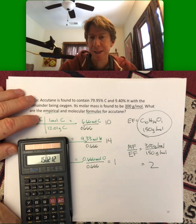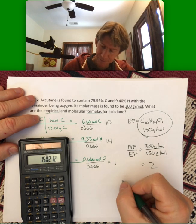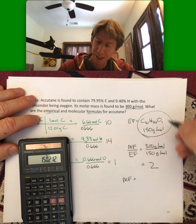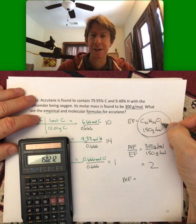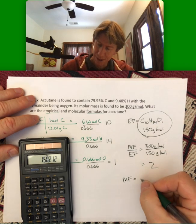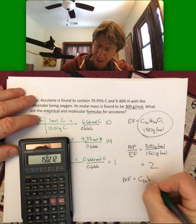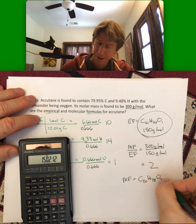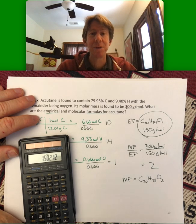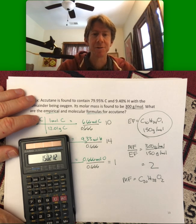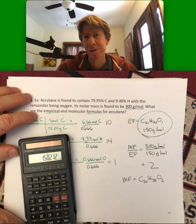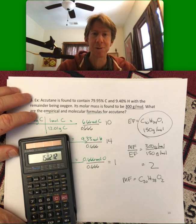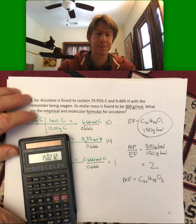That means that the molecular formula is going to take the subscripts of the empirical formula and multiply them times 2. That means I have C20H28O2. A big number, but certainly well within reason for a molecule, a drug, a pharmaceutical, like Accutane. Thank you.